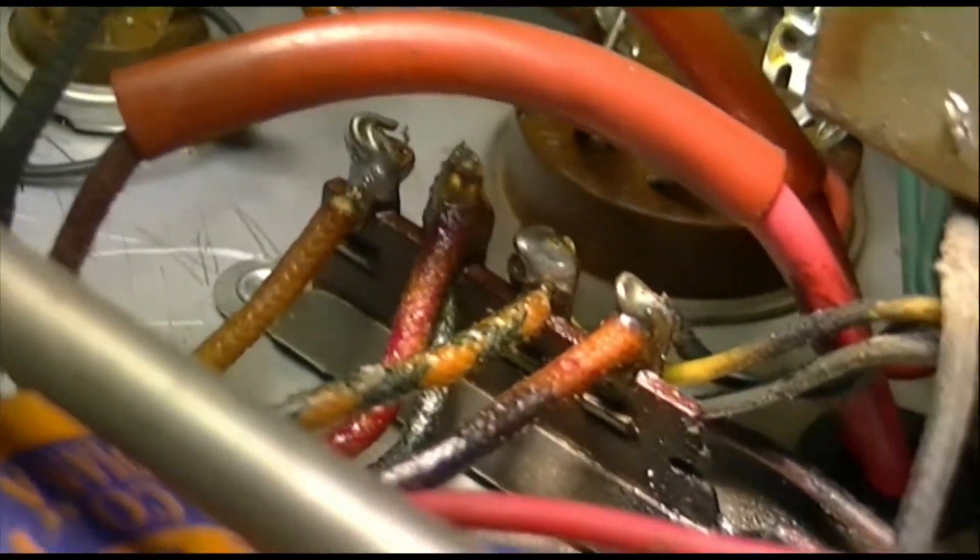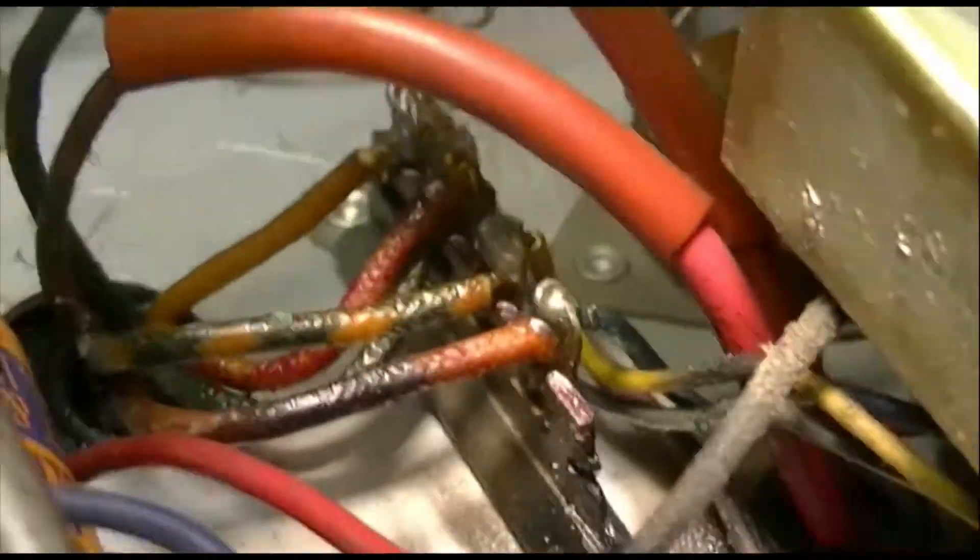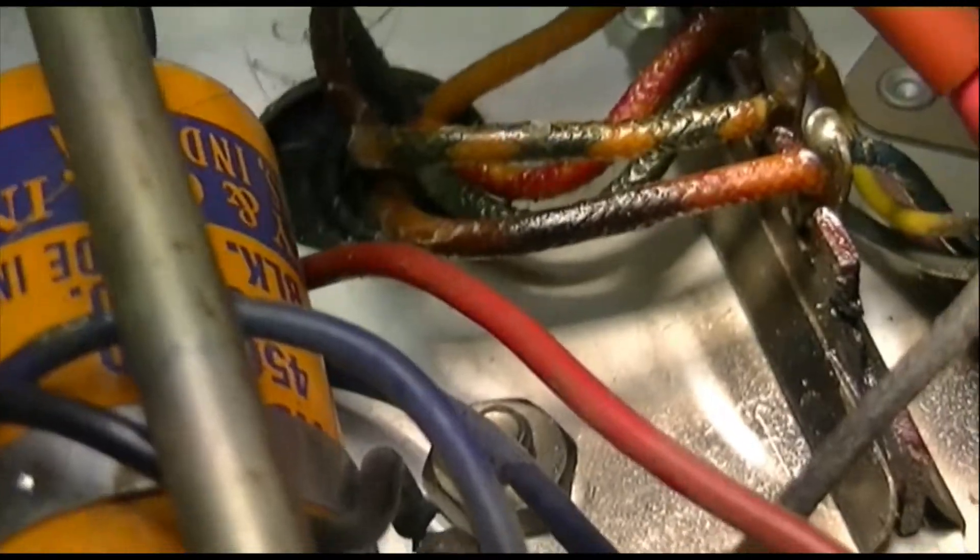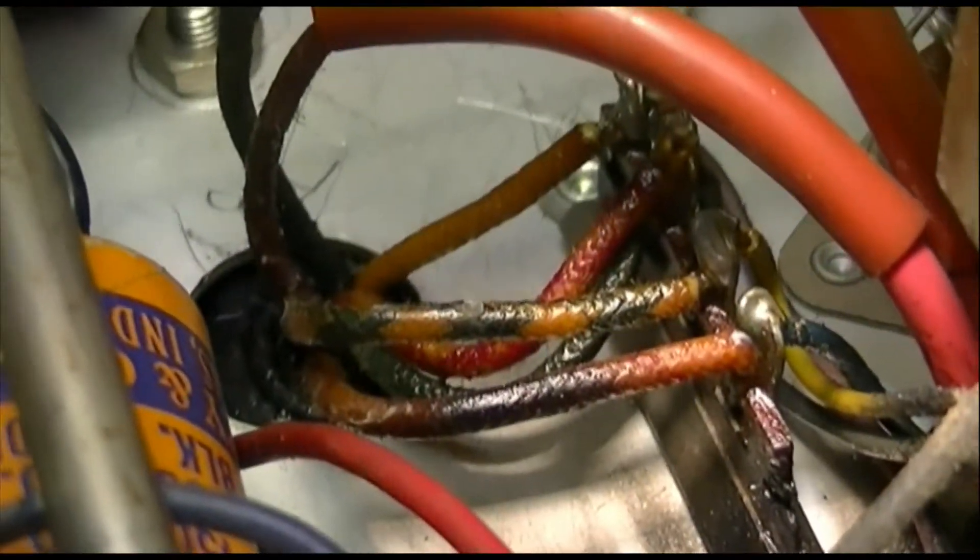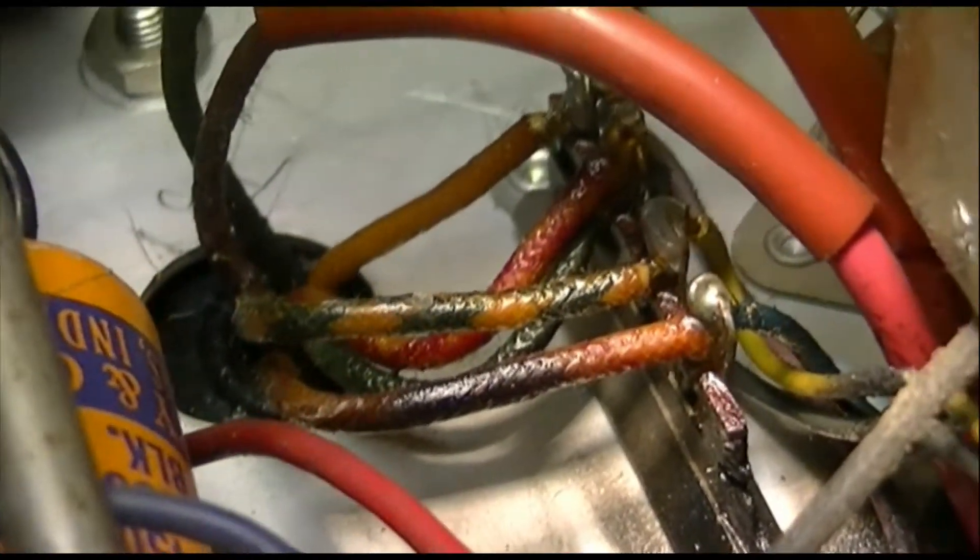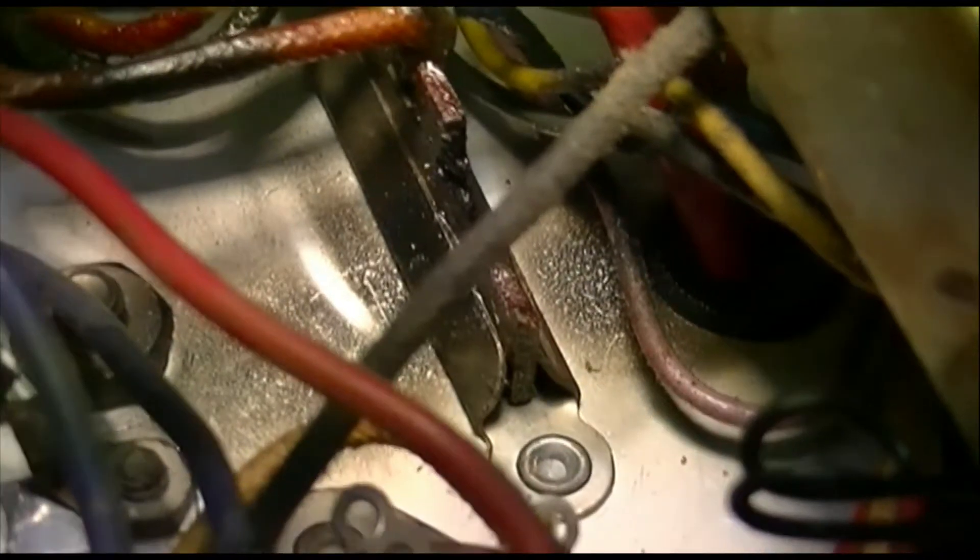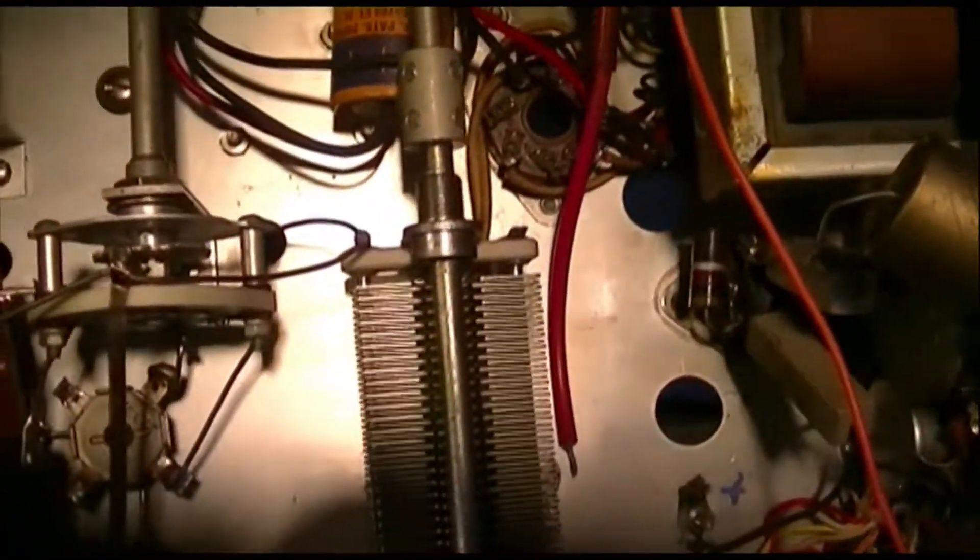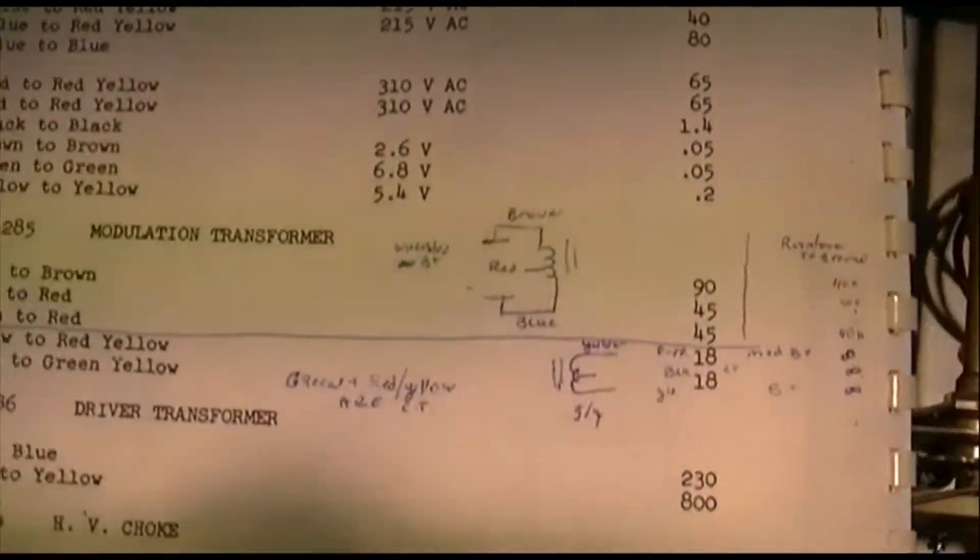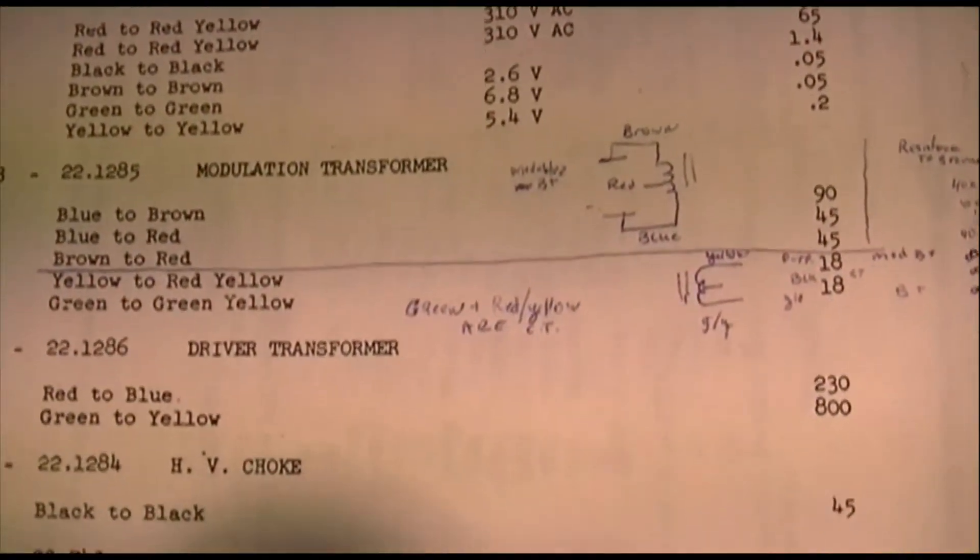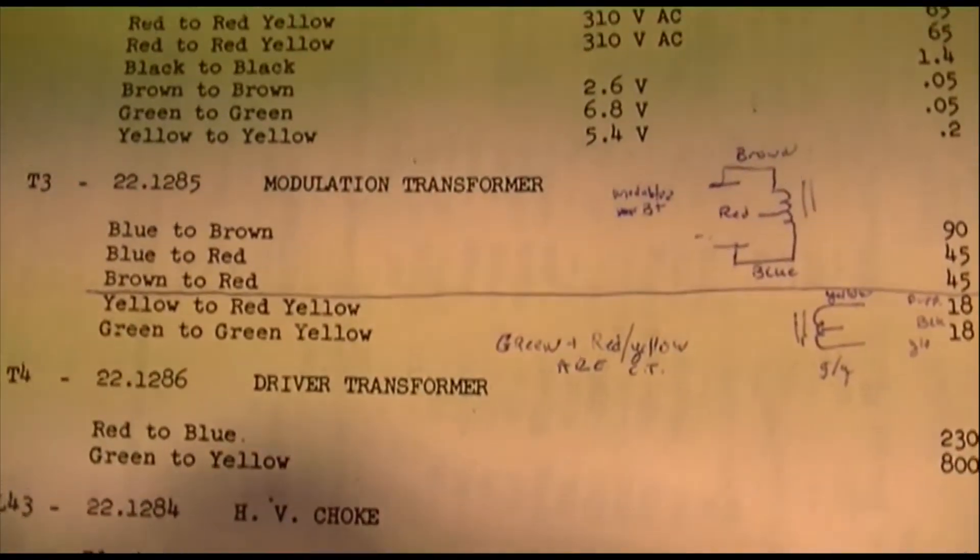It's no big deal to just measure them and make sure that they're pretty close to what they ought to be. Usually there's not any problem. I don't think I've run across a failed Valiant modulation transformer yet, but there's always a first time. So something has happened in here and we don't know what, but we'll find out.